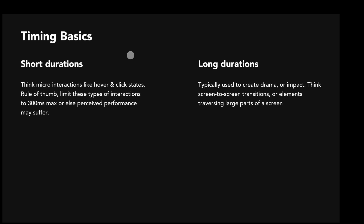A quick note on timing: these are not hard and fast rules, they're more like guiding principles. For micro interactions like hover or click states of a button or radio button selection, you don't want very long durations or your product will start feeling slow and laggy. I recommend 300 milliseconds max for these types of interactions, or else your perceived performance might suffer. Notice I said perceived performance — you can use timing to hack your product into feeling faster. On the flip side, use longer durations for more dramatic things like screen-to-screen transitions or elements that traverse larger parts of the screen.